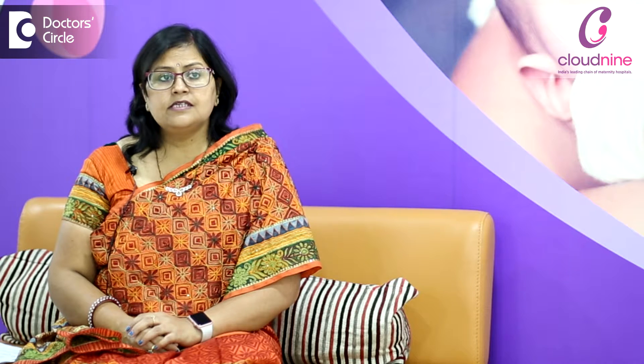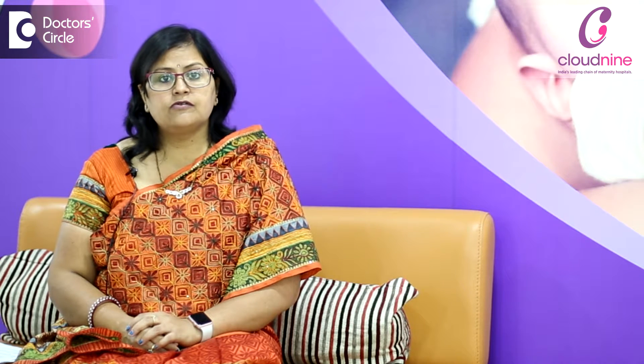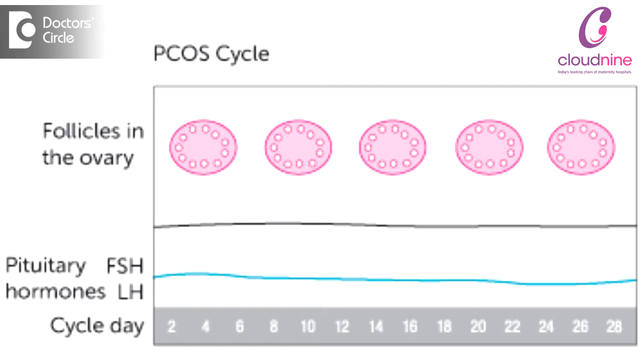Since these patients have chronically high levels of luteinizing hormone and there is no LH surge in the middle of the month, these patients don't ovulate.